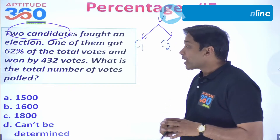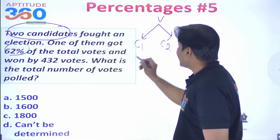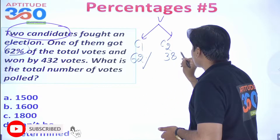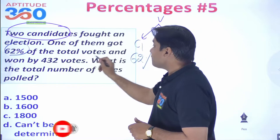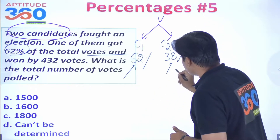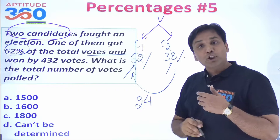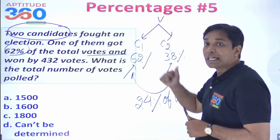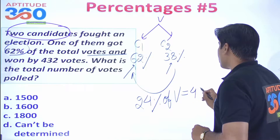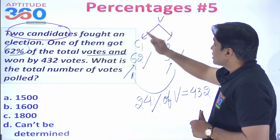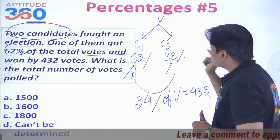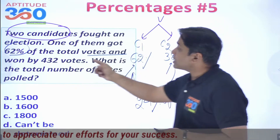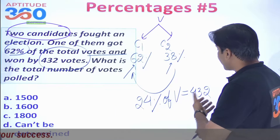If candidate number one is getting 62%, then candidate number two is getting 38%. If candidate one wins and candidate two loses, the difference is 62% minus 38% which is 24%. So 24% of the total votes is the winning margin.